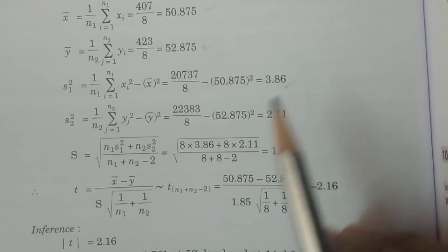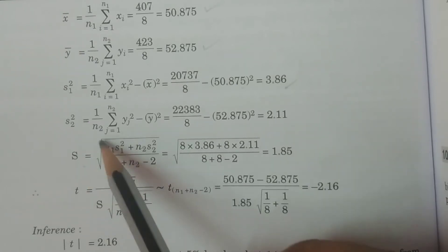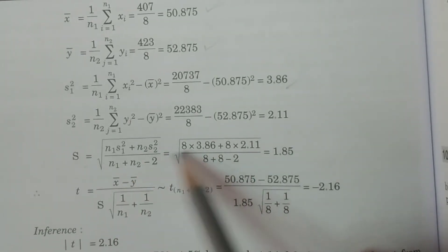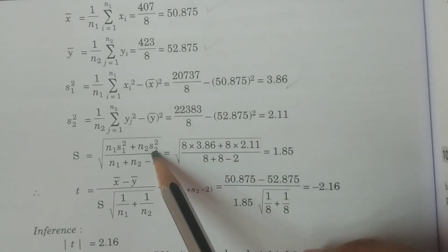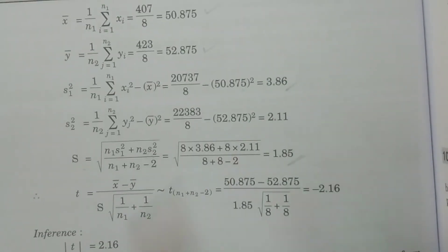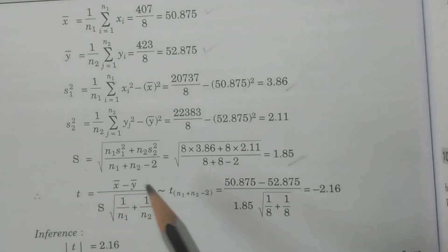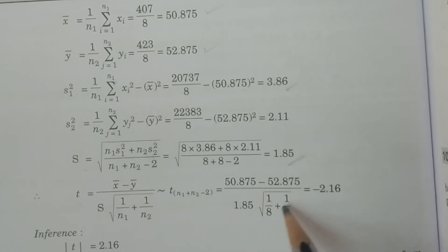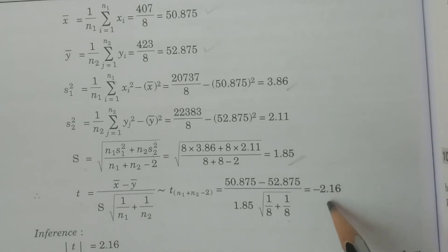From s1² and s2², calculate the pooled standard deviation: S = √[(n1·s1² + n2·s2²) / (n1 + n2 − 2)] = √[(8×3.86 + 8×2.11) / (8+8−2)] = 1.85. Now the t-statistic: t = (x̄ − ȳ) / (S × √(1/n1 + 1/n2)) = (50.875 − 52.875) / (1.85 × √(1/8 + 1/8)) = −2.16.